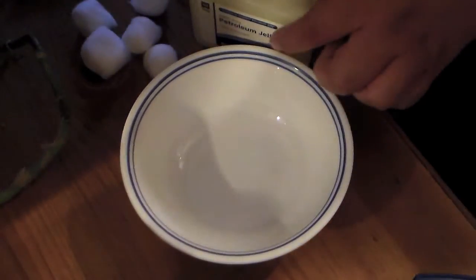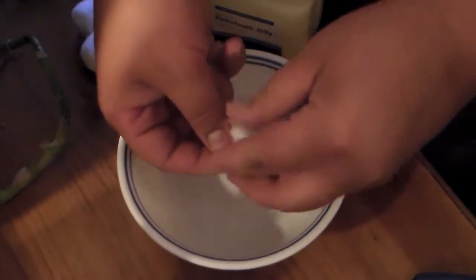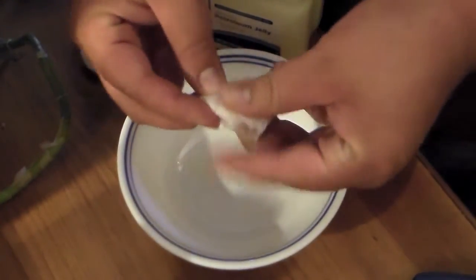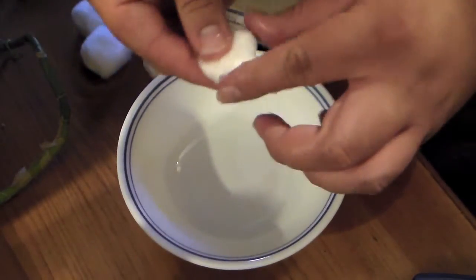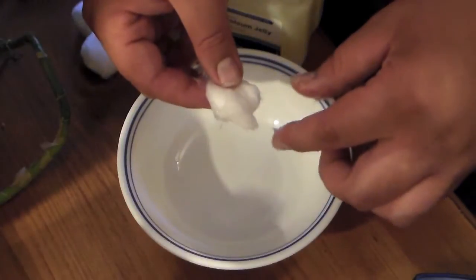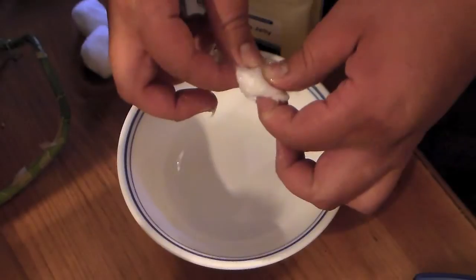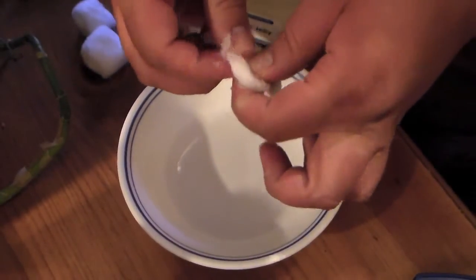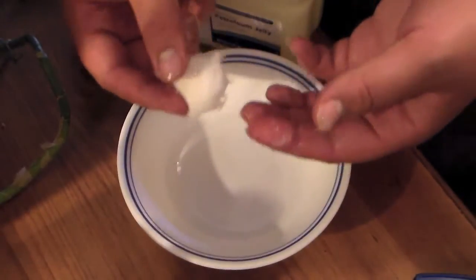they usually do is they take a nice scoop of this stuff and they work it in by hand. So they just sit here and they move it around and they make sure that cotton ball has it all over the place. But what happens a lot of times is the Vaseline only goes on the outside of the cotton ball and doesn't actually get into the inside. And if you can get it to the inside, it takes a lot of aggressive work and it's very messy.